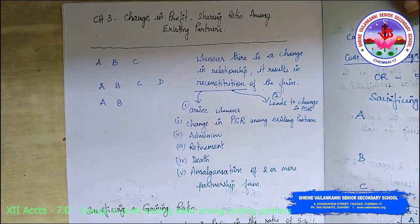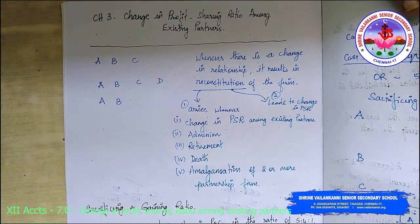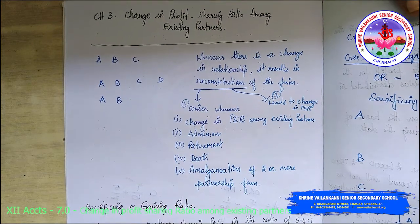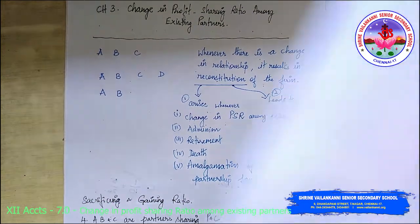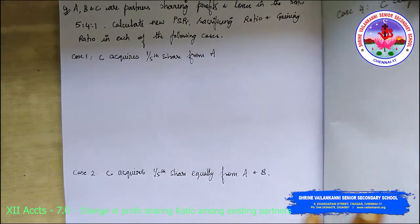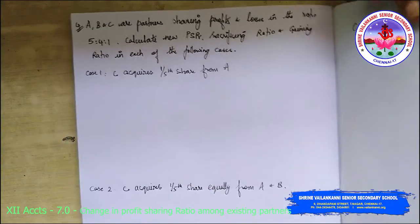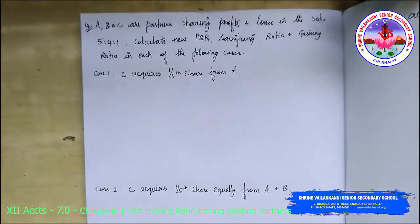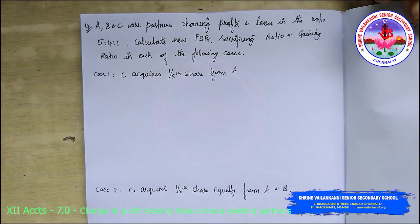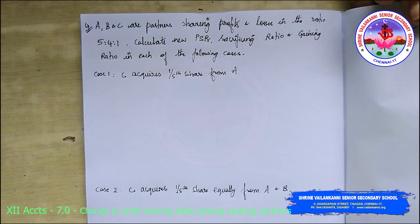We will look into one problem to understand what is sacrificing ratio and gaining ratio. Problem number 4 in your exercise: A, B, C are partners sharing profits and losses in the ratio of 5:4:1. Calculate the new profit sharing ratio (PSR), sacrificing ratio, and gaining ratio in each of the following cases.